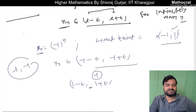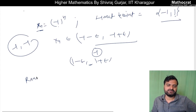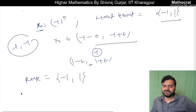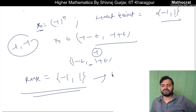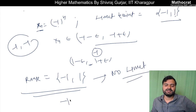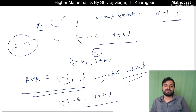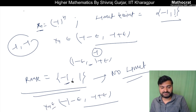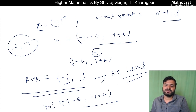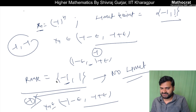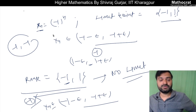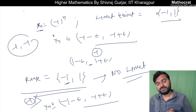Now if the range of this sequence is asked, the range is just {minus 1, 1}. Looking at this range, notice that minus 1 is not a limit point of the range, because in the interval (minus 1 minus epsilon, minus 1 plus epsilon), only minus 1 itself belongs — it is not the case that infinitely many distinct elements of the range are appearing. That is why minus 1 is not a limit point of the range. This helps us understand that a limit point of a sequence need not be a limit point of its range.